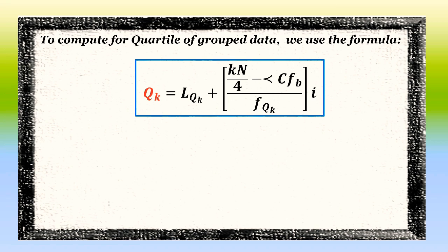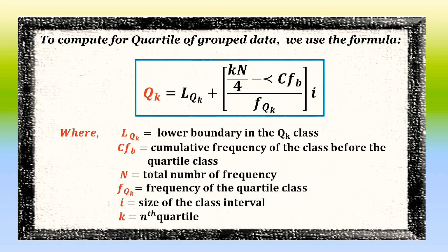To compute for the quartile of grouped data, we use the formula: Q sub k equals L sub Qk plus the quantity k times n over 4, minus the less-than cumulative frequency before the class, all over f sub Qk, times i. Wherein L sub Qk stands for the lower boundary of the Q sub k class, cfb is the cumulative frequency of the class before the quartile class, n is the total number of frequency, f sub Qk is the frequency of the quartile class, i is the size of the class interval, and k is the nth quartile.